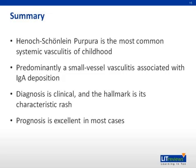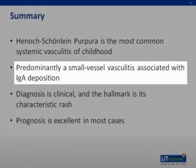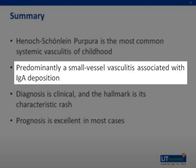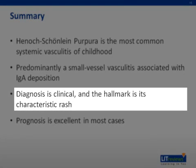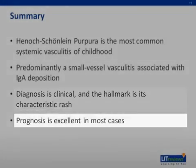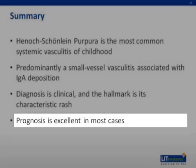In summary, HSP is the most common vasculitis of childhood, and it is predominantly a small vessel vasculitis associated with IgA deposition. The diagnosis is clinical, including its hallmark rash. Prognosis is excellent in most cases.